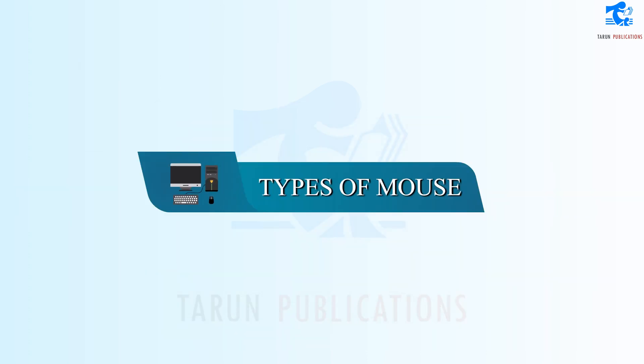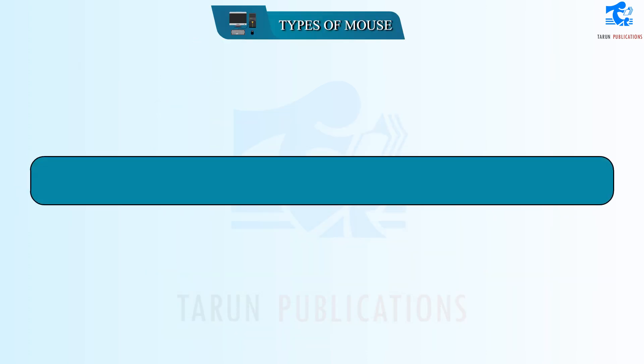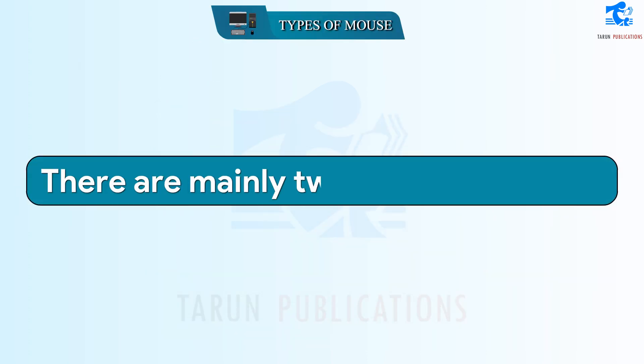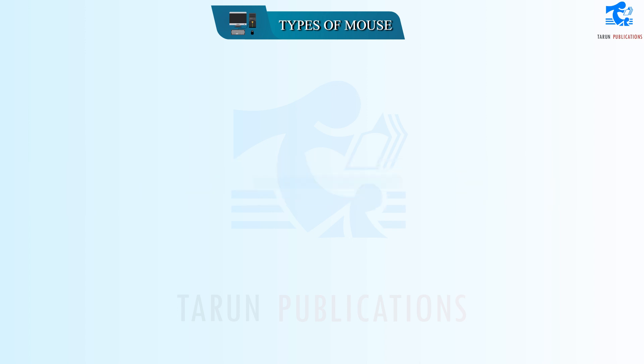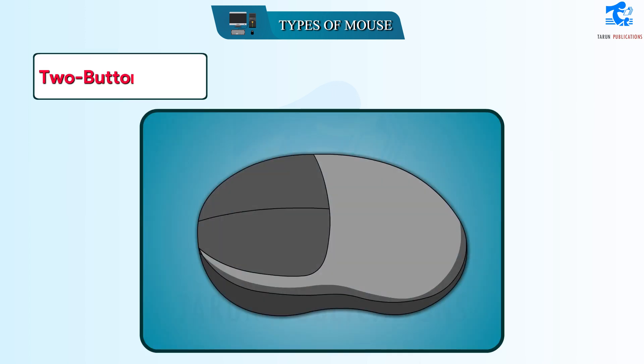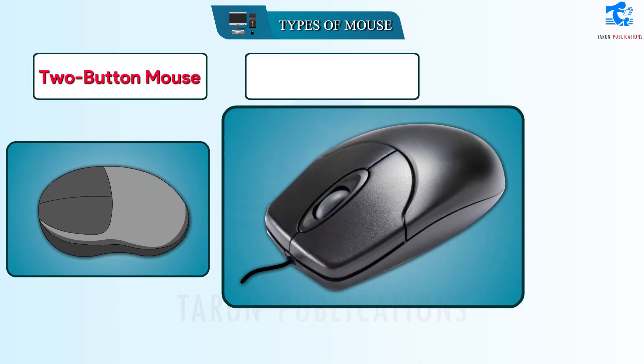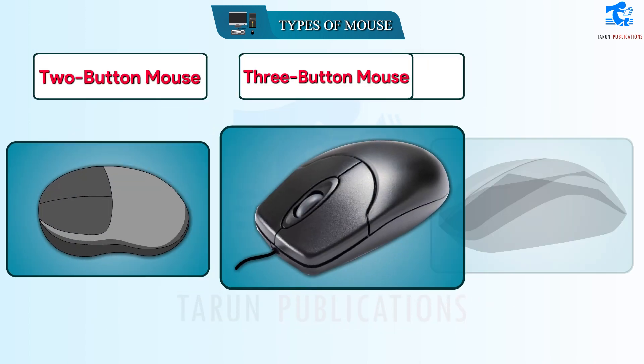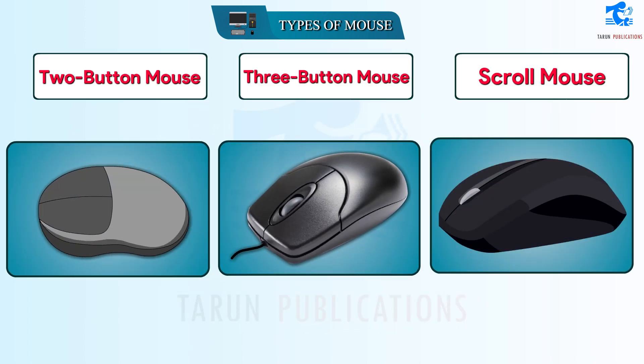Types of Mouse. There are mainly two types of mouse: the two-button mouse and the three-button scroll mouse.